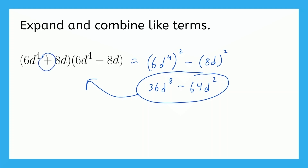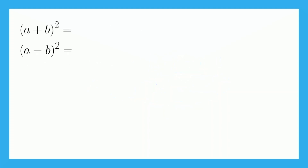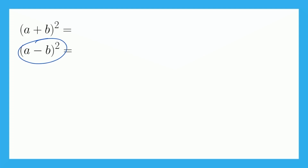If we had the same sign in each of the binomials and everything else was the same, we would have what's called a perfect square. There are two types of perfect squares: one has the form a plus b, all squared, and the second type is a minus b, all squared. So let's expand these out and see what we get.